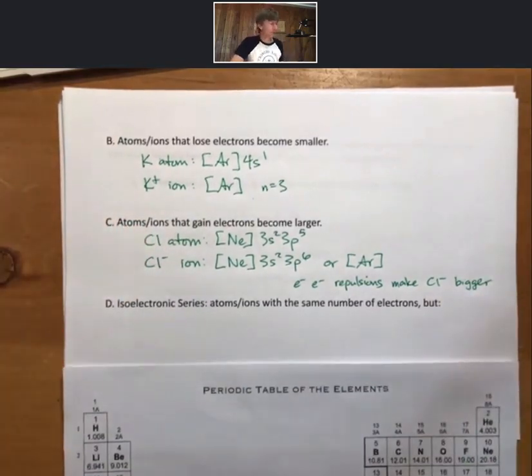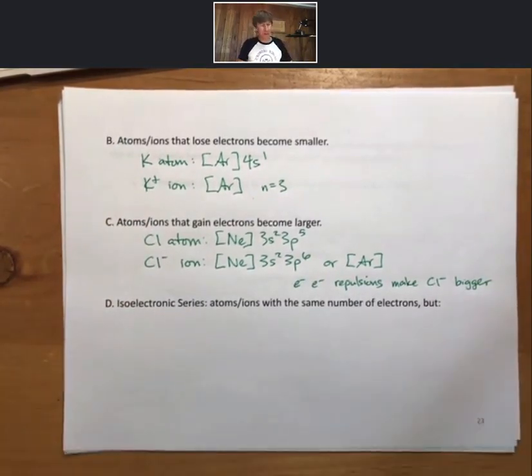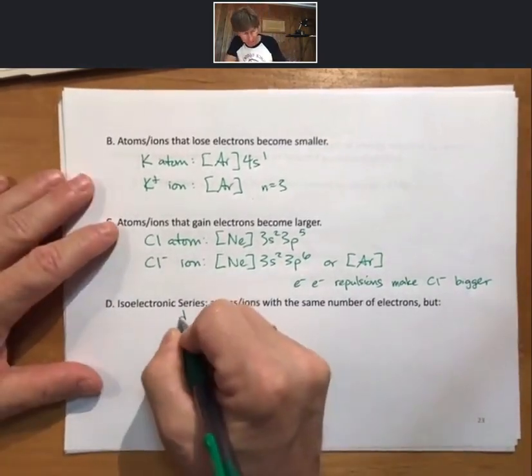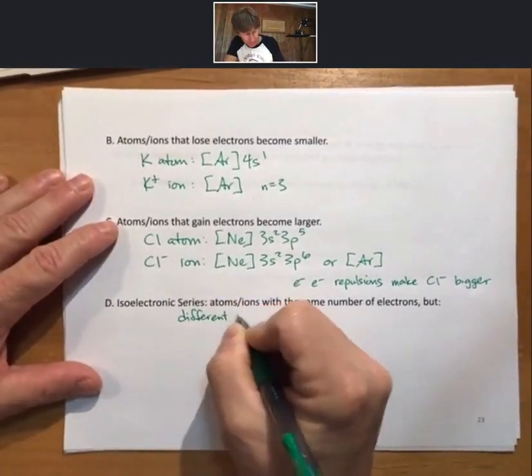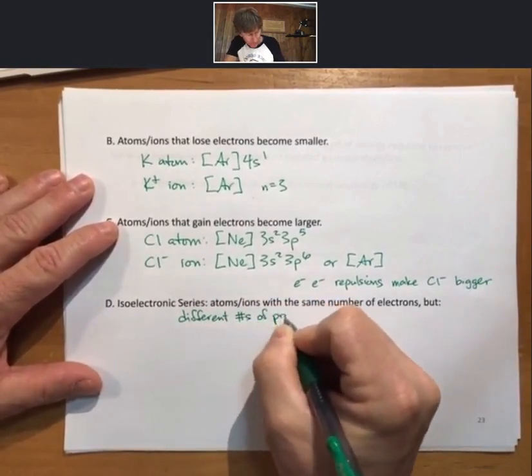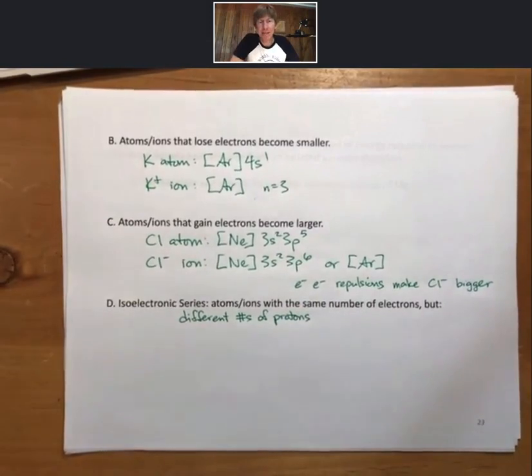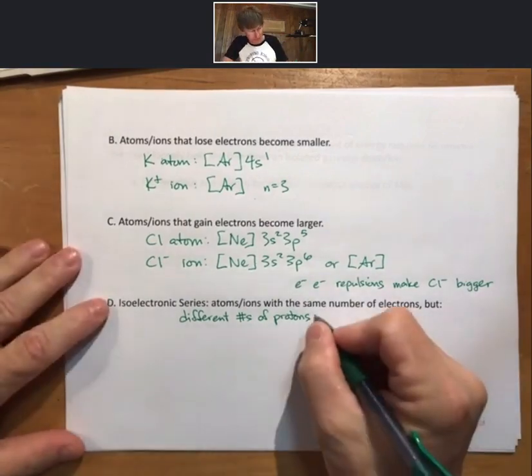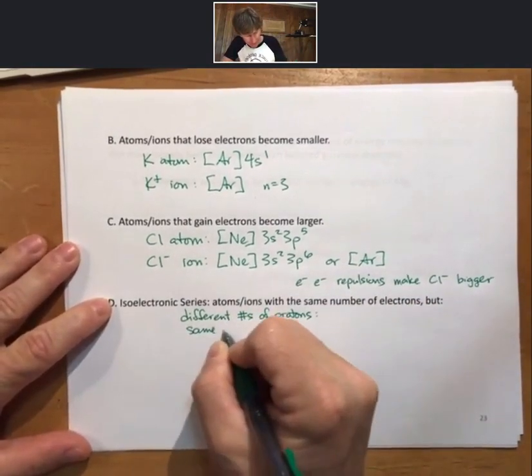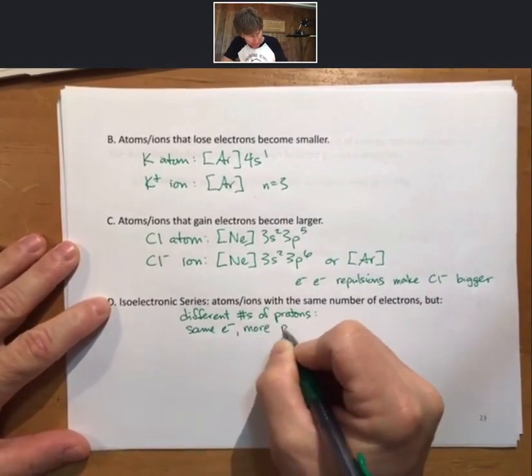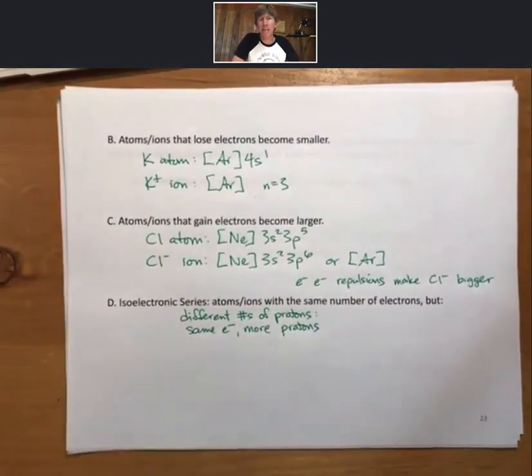Now, I want to talk about what's called an isoelectronic series. Isoelectronic series are atoms or ions with the same number of electrons, but different numbers of protons. And as you might guess, more protons has more ability to pull electrons closer to the nucleus, a larger effective nuclear charge, and will be smaller. So same electrons, but more protons leads to smaller atom or ion.